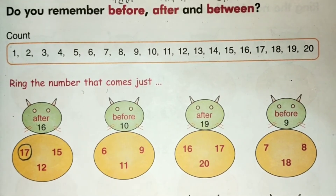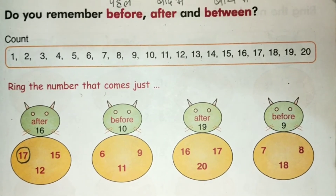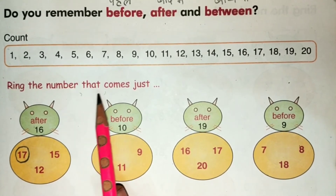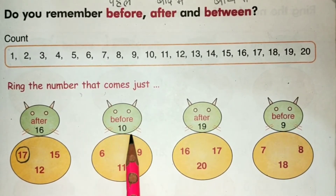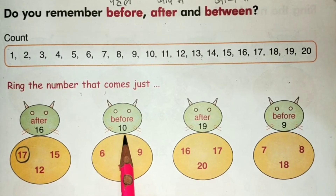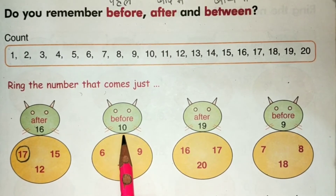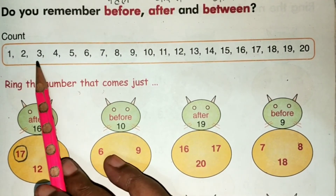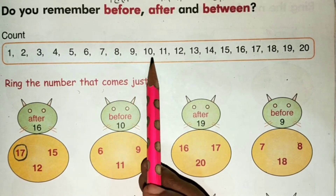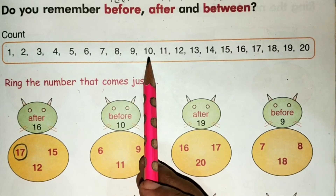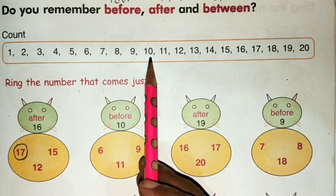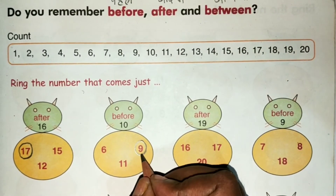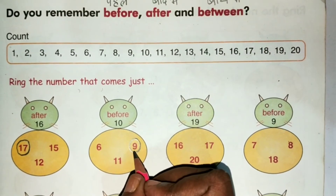Now we will see the next problem: what comes just before 10? 10 ke pehle kya aata hai? Ab hum log backward counting dekhenge: 10, 9, 8, 7, 6, 5, 4, 3, 2, 1. Hum log dekh liye ki 10 ke pehle 9 aata hai, toh hum log 9 ko ring kar denge. We have to encircle 9, because 9 comes before 10.